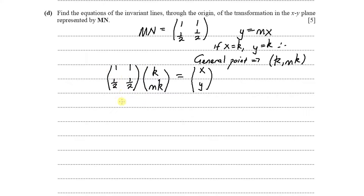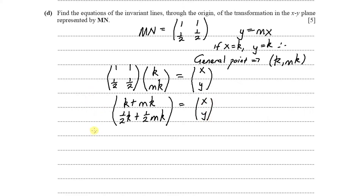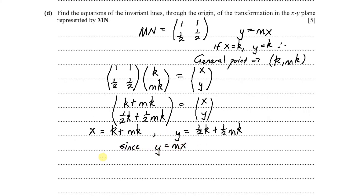Multiplying row by column: top row gives 1×k + 1×mk = k + mk; bottom row gives ½×k + ½×mk = ½k + ½mk. So the image is x' = k + mk and y' = ½k + ½mk. Since the line equation is y = mx, we substitute: ½k + ½mk = m(k + mk). Dividing through by k gives ½ + ½m = m + m².